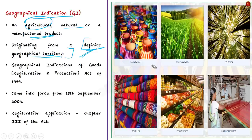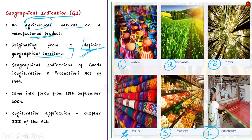The six categories under which GI tags are assigned are: handicrafts, agriculture, natural, textiles, foodstuff, and manufactured. To offer protection to such genuine products from fake products, the law called Geographical Indications of Goods Registration and Protection Act of 1999 was legislated.